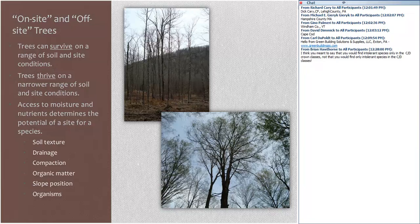Soil conditions combine with site conditions, which usually reflect topography but can also be a combination of topography and structures within the soil like fragipans or impermeable layers, to create site. Site is the aggregate of soil and topography, and site influences which trees are able to survive and which trees are able to thrive.